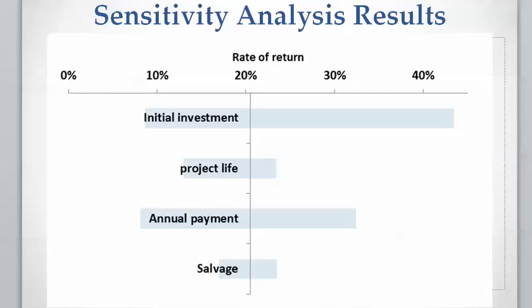We can also summarize these results in a graph called a tornado graph. The vertical line shows the base case where nothing is changed and the rate of return is 20.5%. Each bar shows what the change in the rate of return would be if that input variable changes from 40% negative to 40% positive.